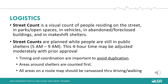The general street count is a visual count of people residing on the streets, in parks and open spaces, in tents, in vehicles, in abandoned buildings, or in makeshift shelters constructed of tarps, cardboard, or other materials. The street count will be conducted while people are still in public shelters in the morning, which will help us have an unduplicated count of everyone experiencing homelessness that day. To avoid duplication, we ask you to count the areas surrounding shelters first.